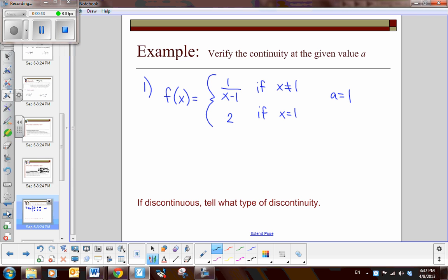Our first problem: we're given this piecewise function and have to verify the continuity at A equals 1. First, does the value exist? When I have F of 1, is there an answer? If I look here, if X equals 1, then the output is 2. So that works.